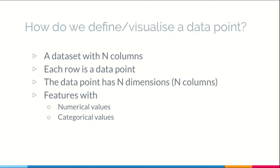So how do we visualize or define a data point? In a data set there would be n columns that is n features. Each sample will have n features and each row is a sample that is a data point. Now a data point will have n dimensions because it has n features. These features may be numerical values or categorical values. But to plot a data point we need all of them to be numerical values. Thus the categorical values have to be converted to numerical values.